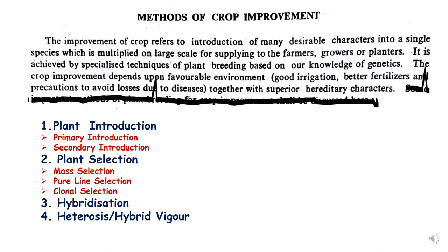Crop improvement depends on favorable environment like good irrigation, better fertilization, and precautions to avoid losses due to diseases, together with superior heritage characters. In crop improvement methods there are many parts: first is plant introduction, which includes primary and secondary introduction; second is plant selection with three kinds — mass, pure line, and clonal selection; third is hybridization; and fourth is hybrid vigor or heterosis.